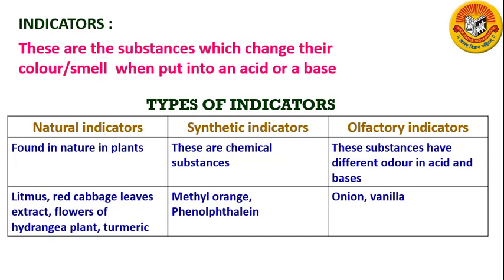The third type is olfactory indicators. These are substances having different odor in acids and bases. Onion and vanilla are the best examples of olfactory indicators.